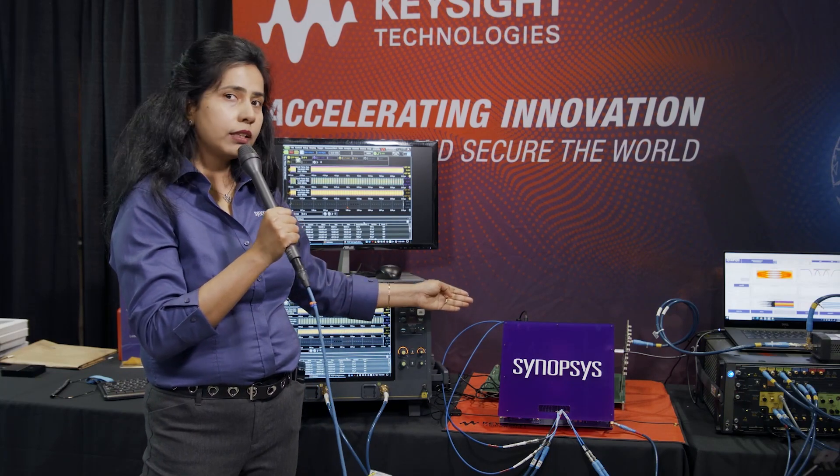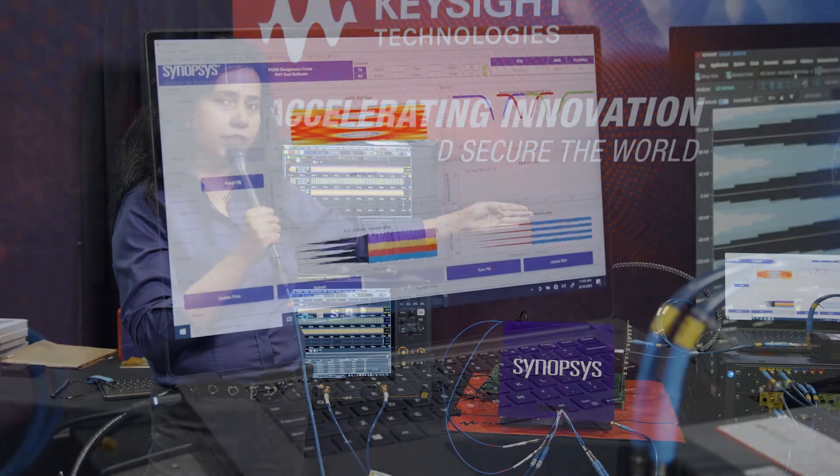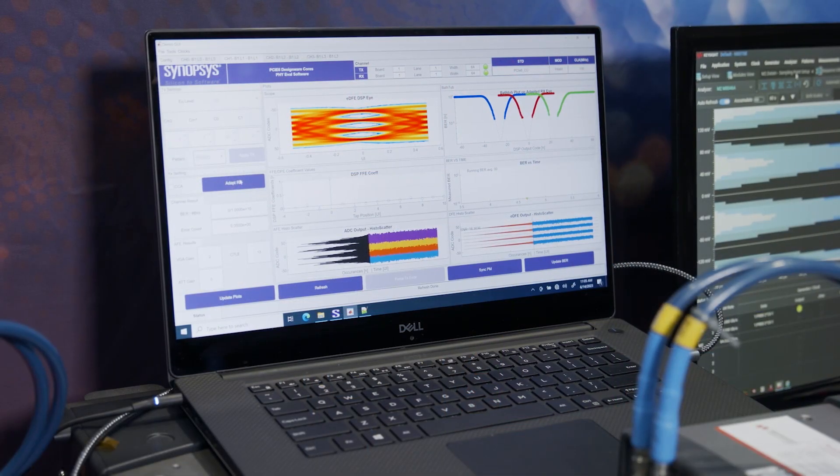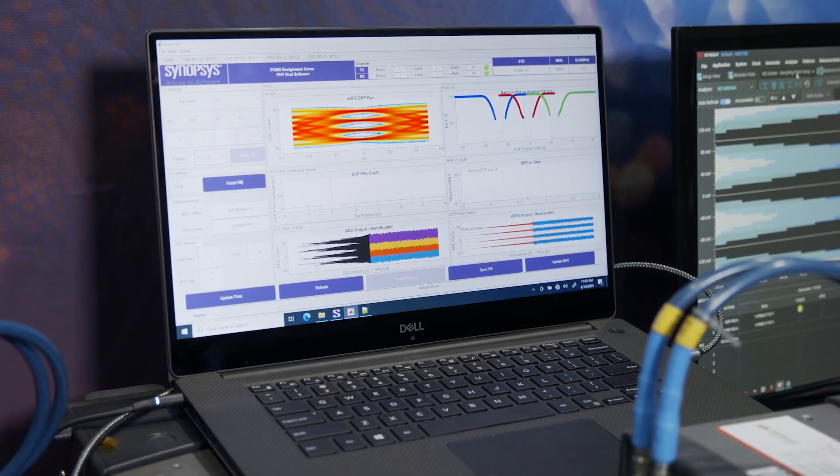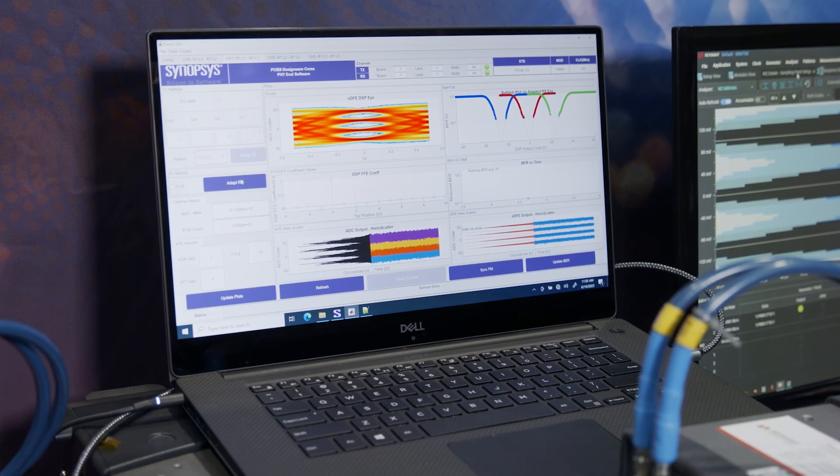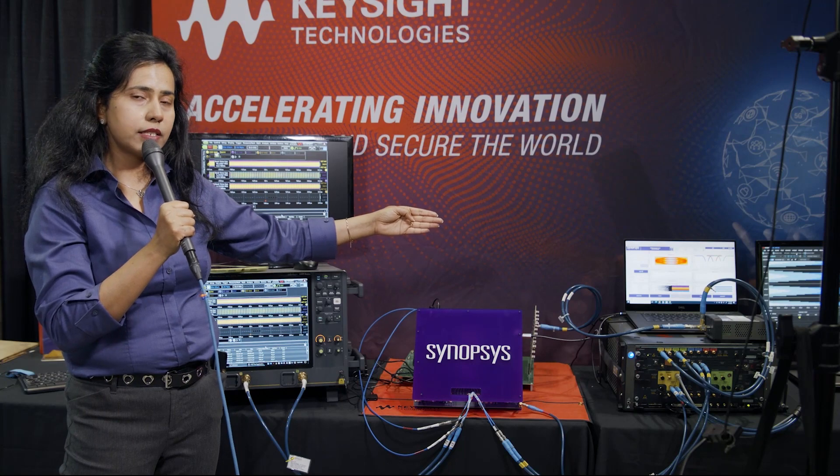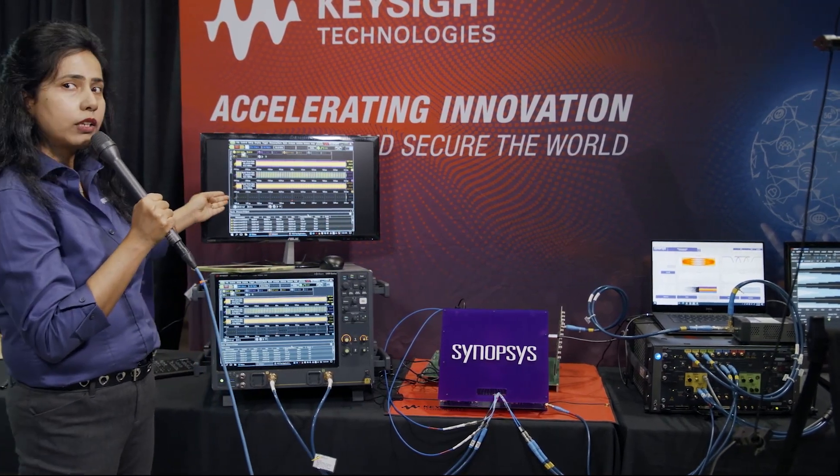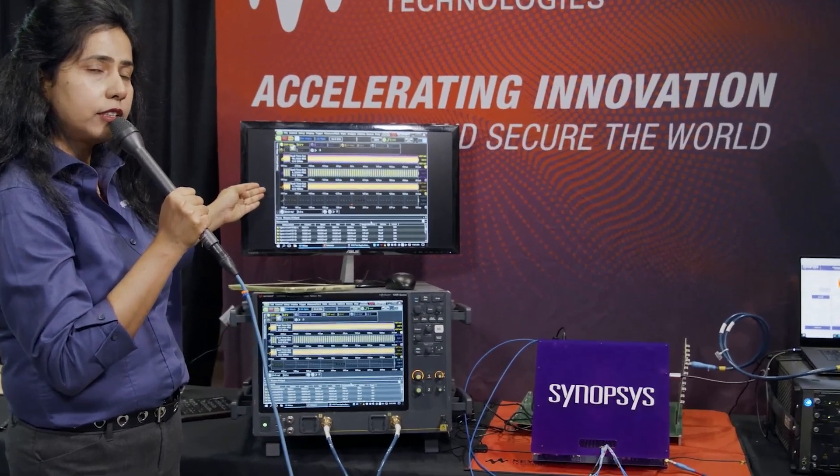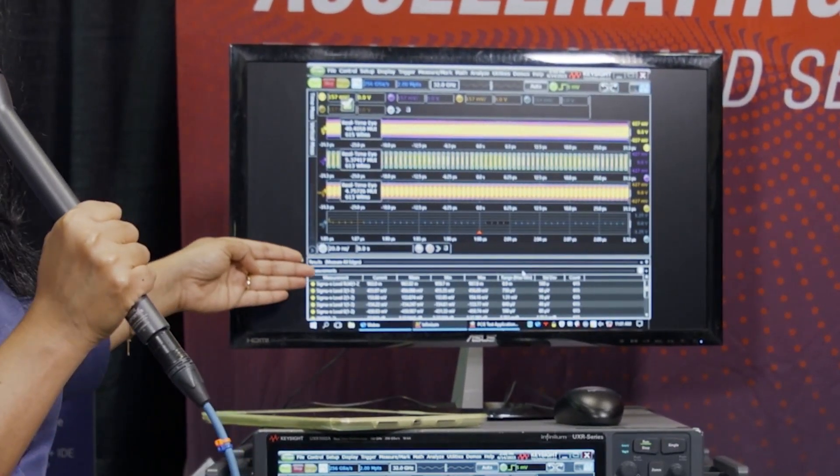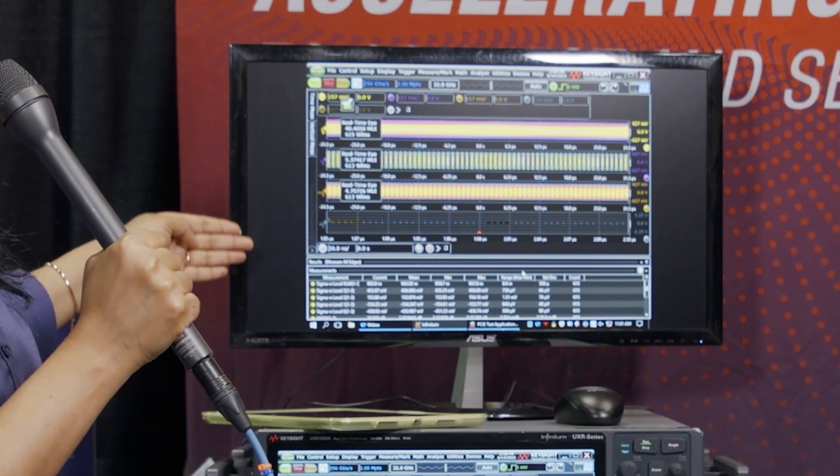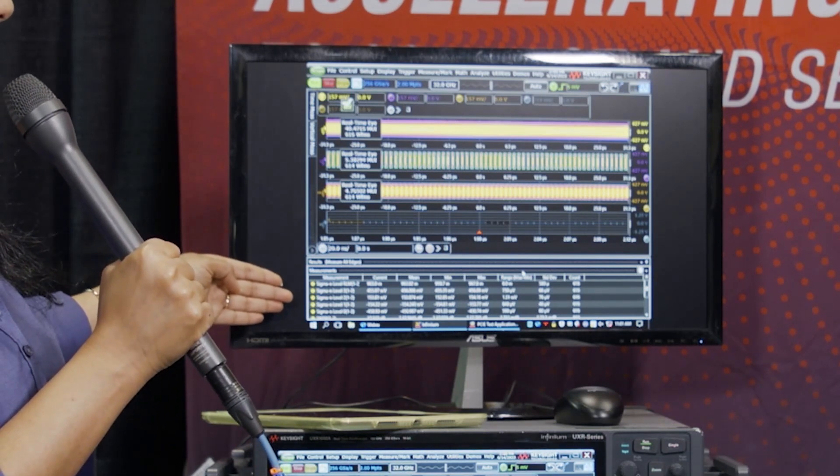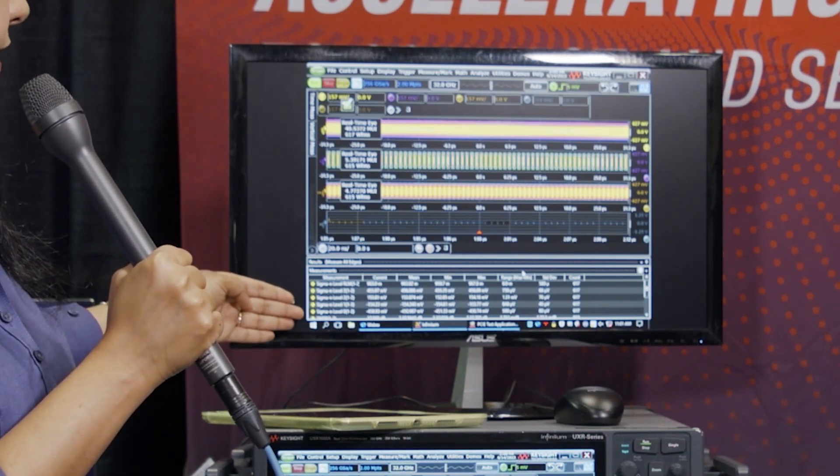It's showing a zero bit error rate on the graphical user interface. The graphical interface is showing wide open PAM4 eyes with the pre-ADC histogram as well as the post-DSP equalized histogram with zero bit error rate. On the graphical interface here, it's showing the transmitter pattern and the transmitter PAM4 pattern eye characteristics. The SNDR here is showing 37.56, which is much better than the spec.